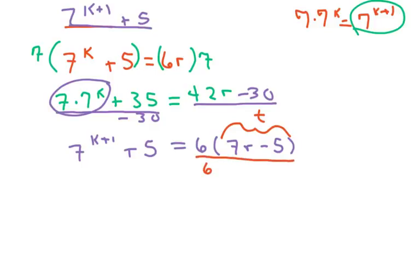So if we have t equals 7r minus 5 and it's an integer, we have shown that s of n is valid. And s sub n plus 1 is also valid. And so it's divisible by 6 for all integral values of n.